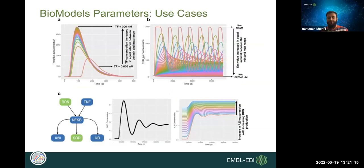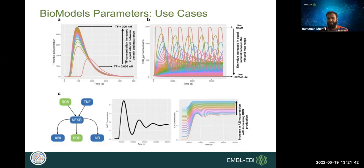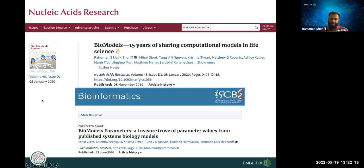BioModels Parameters has several use cases: you can get initial concentrations of a protein of interest from various studies to scan your model, or get parameter values like KM values — which show a huge range across different modeling studies. You can also take reaction rates and equations from one model and integrate them with another to build a new model. For example, we combined a TNF-NF-κB A20 model with an ROS-NF-κB SOD model to examine the effect of ROS on inhibitor κB or A20.